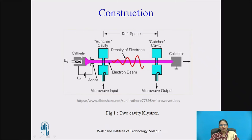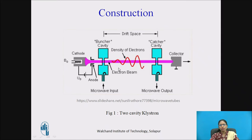This is the heater and this is the cathode. From the cathode, electrons are emitted and move towards the collector. These are the focusing anodes. The supply is shown with negative and positive towards the anode. The distance between the two cavities is called the drift space. What happens between these two cavities is the velocity modulation process, where the density of electrons changes.